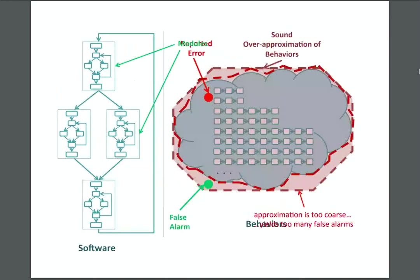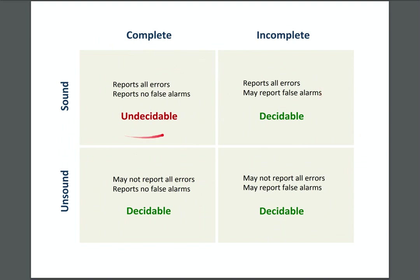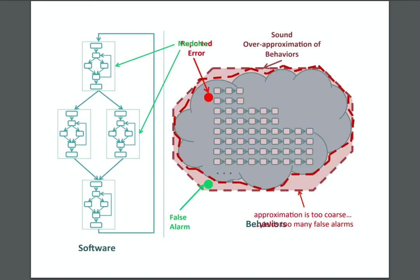Here's the issue graphically: a sound analysis creates a model of the program. In the cloud is the real program's behavior — the potentially infinite set of traces for all possible inputs. With static program analysis trying to prove safety, it creates an over-approximation of all behavior. That means if the program can't be proven safe, we don't know whether that's a behavior inside the real program or a behavior in our model that is not actually a valid trace.